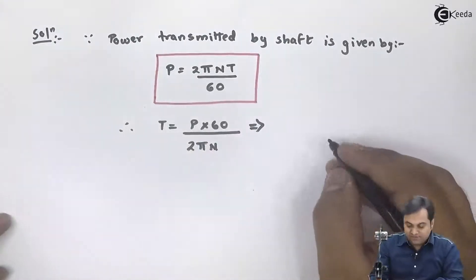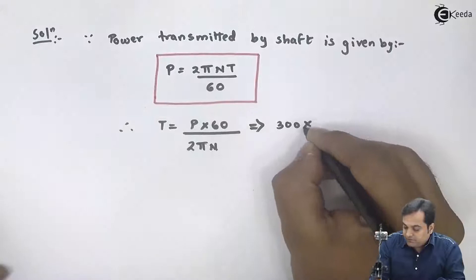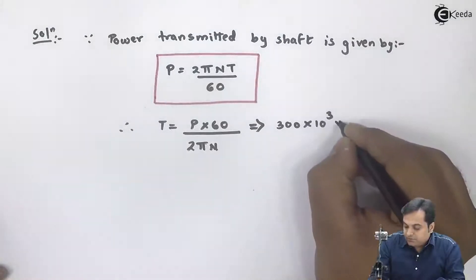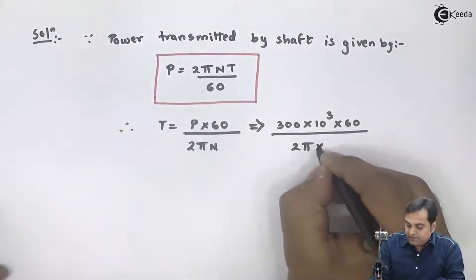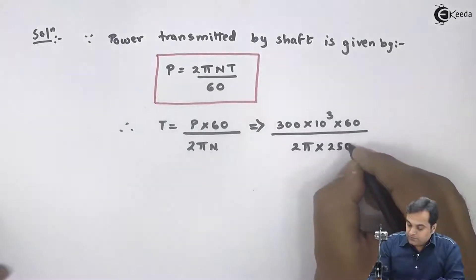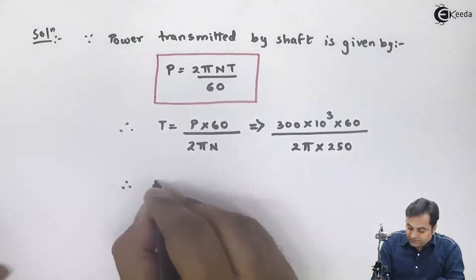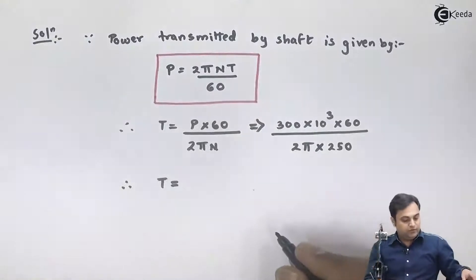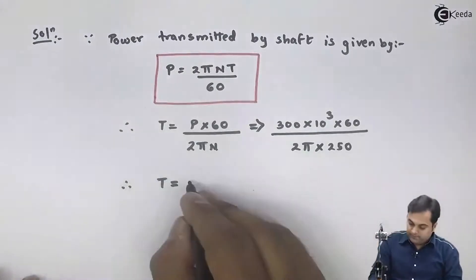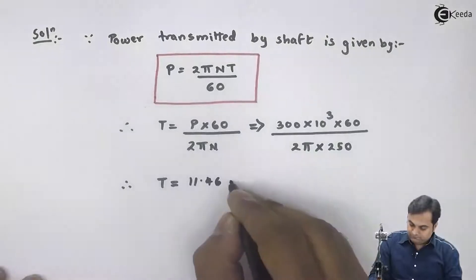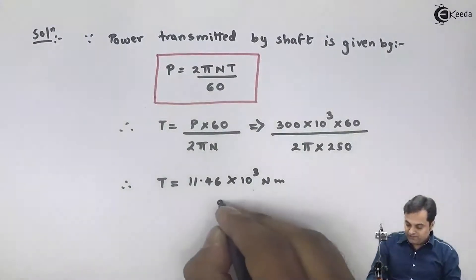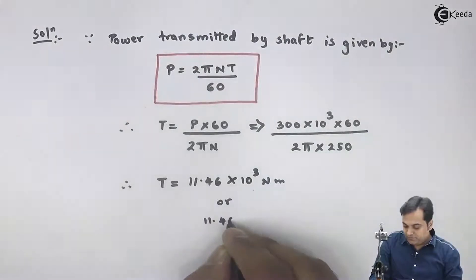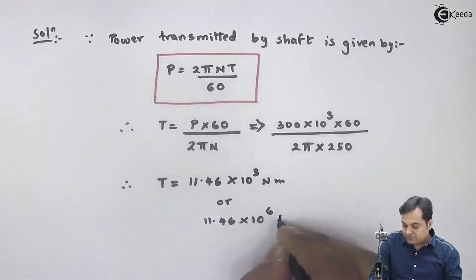Power is 300 kilowatts and N is 250 rpm. Calculating, the value of torque comes out to be 11.46 into 10 raised to 3 newton meter, which we can convert to 11.46 into 10 raised to 6 newton mm.